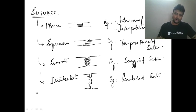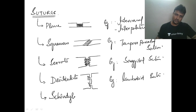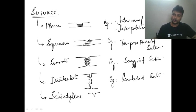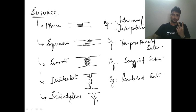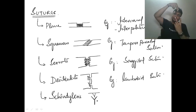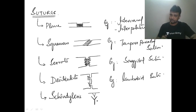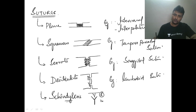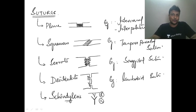There is also a special category of suture called schindylasis. In schindylasis, the rostrum of the sphenoid bone fits into the alae of the vomer bone. The rostrum fits into that groove, making it a special type of suture called schindylasis.